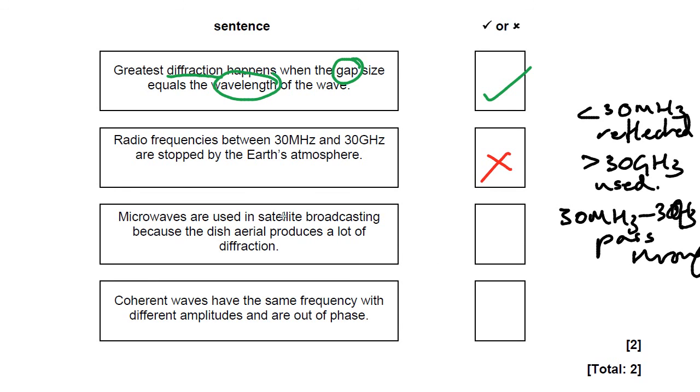Microwaves are used in satellite dish broadcasting because dish aerial produces a lot of diffraction. Well, no, actually, if we had a lot of diffraction, we wouldn't get a clear signal. Microwaves are used because the dish is much larger than the wavelength of the microwaves. So therefore, we don't get a lot of diffraction and we get a good clear signal.